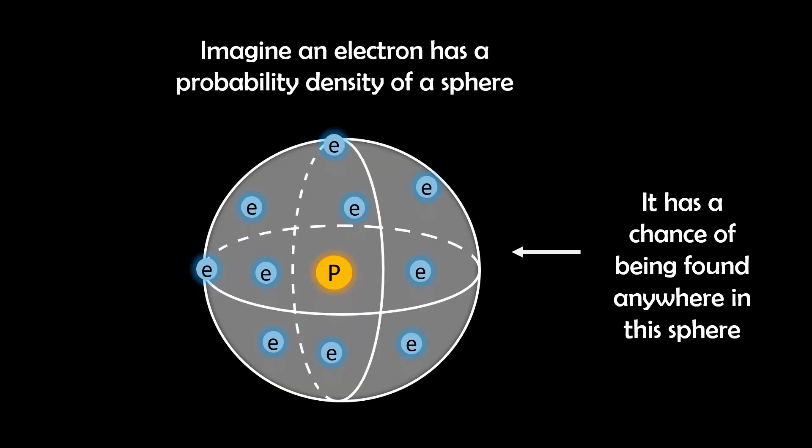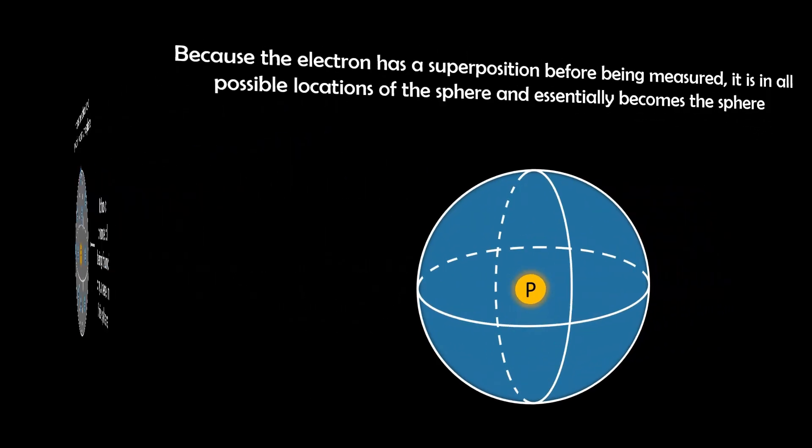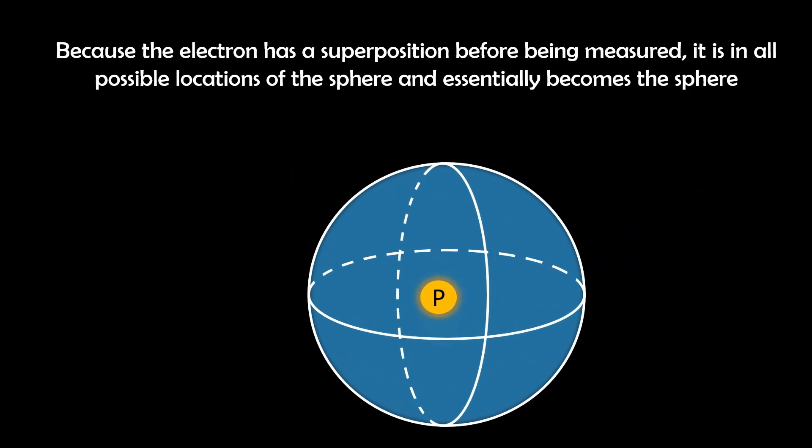So from an atomic standpoint, imagine an electron having a position probability across the entire volume of a sphere surrounding the nucleus. And due to it having a superposition, the electron location isn't a single point, but rather is spread out over the entire sphere, embodying all possible points simultaneously. And this is how we get orbitals.